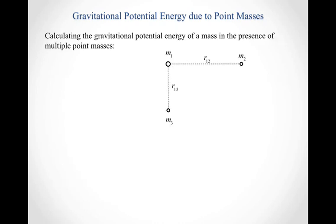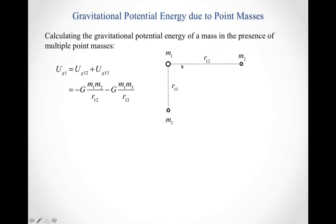If we have multiple masses and want to calculate the gravitational potential energy of one mass in the presence of several others, we simply keep track of all the possible interactions. The gravitational potential energy of mass 1 has two terms: one describing the interaction between mass 1 and mass 2, and another for mass 1 and mass 3. We calculate each term using negative G times the product of the masses over the distance, then add them together as scalars — which makes it much easier than working with vectors.